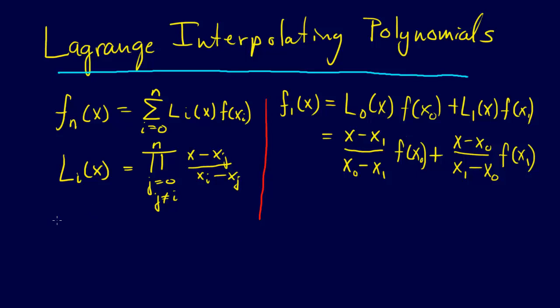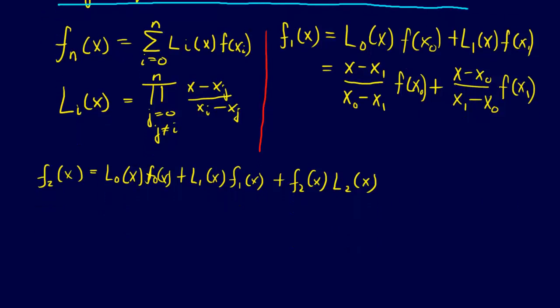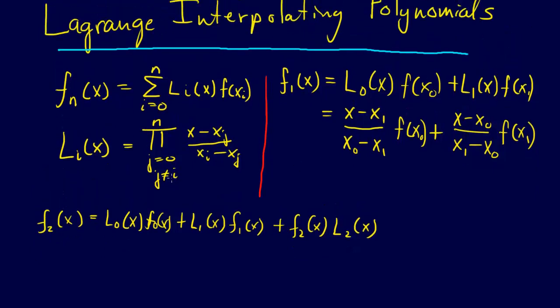Now just for good measure, I want to go ahead and write out one more of these, so let's write out the second order one. F2 of X equals L naught of X times F naught of X plus L1 of X times F1 of X plus F2 of X, L2 of X. Now let's come up with our polynomial.